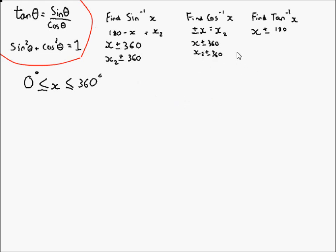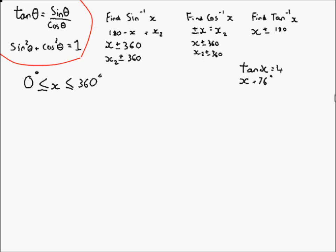For instance, we can have tan x equals 4. Using tan inverse on the calculator — hopefully you're in degrees not radians — that gives x equals approximately 79.96, which we round to 76 degrees. But that's not your only answer in the range 0 to 360.